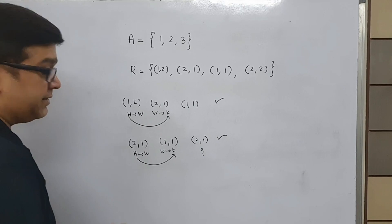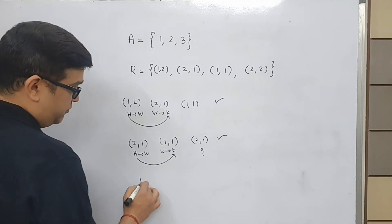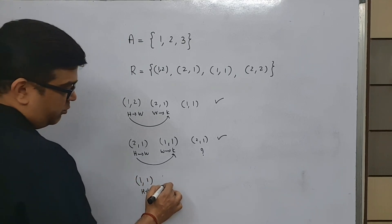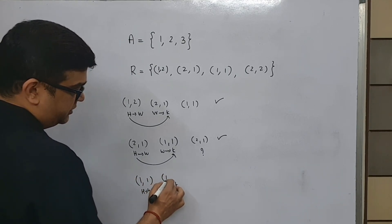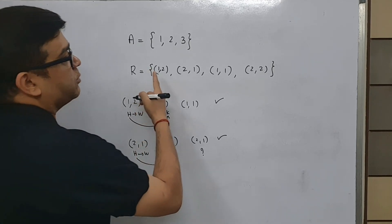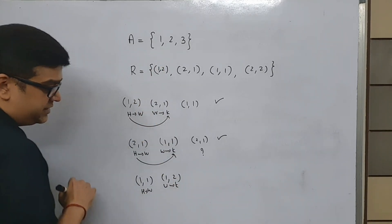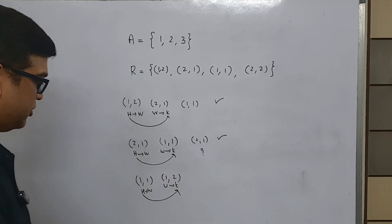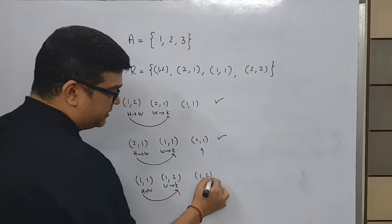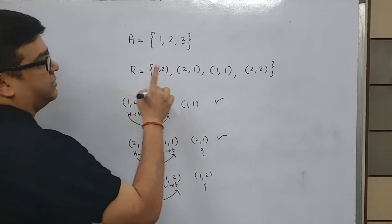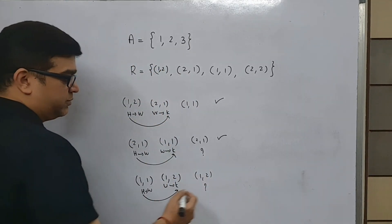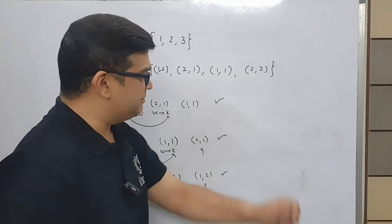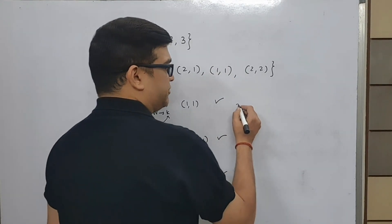Now let us look for (1,1). Let us be very careful. Husband is related to wife. Now wife has a kid — let us check whether 1 is related to something. 1 is related to 2. Now whether husband accepts the kid — whether (1,2) is present. Let us see: yes, (1,2) is present. Therefore no problem from this side also. Now the last element is (2,2). Let us check for (2,2).